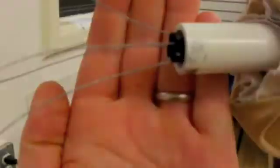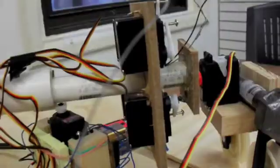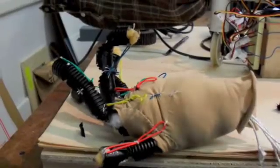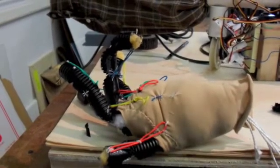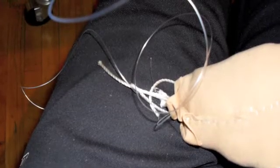We made a number of decisions and changed a number of decisions along the way. As you saw a couple slides back there, we started using string. We eventually went to fishing line that controlled the fingers. We started using rubber bands as a passive system to pull the fingers back. We eventually just reinforced it with plastic.